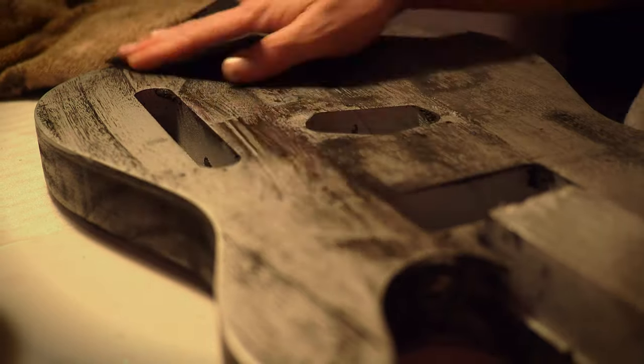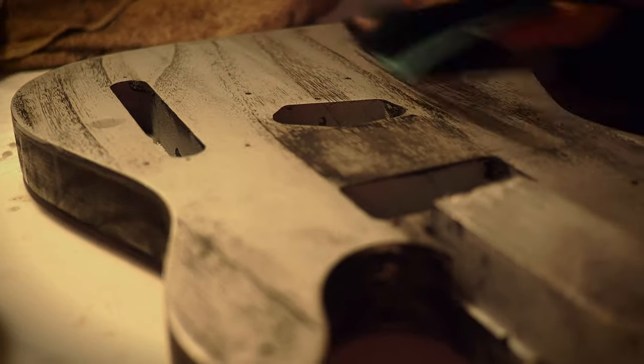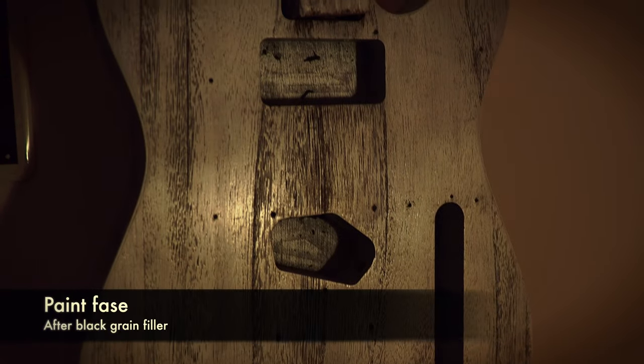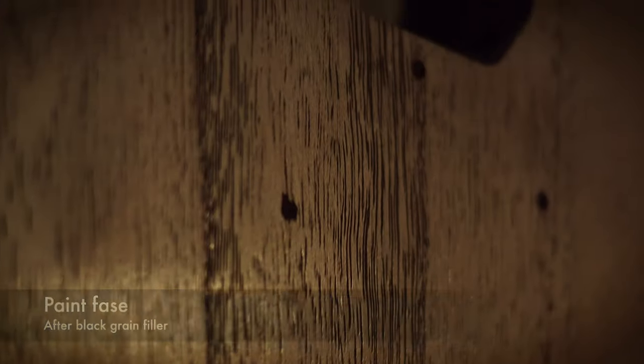I used 1200 grit sandpaper and water. Very carefully I removed the grain filler, little by little. And I was left with a silver metallic body with black grains.